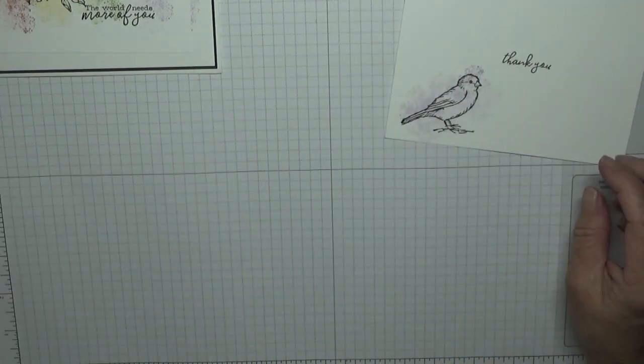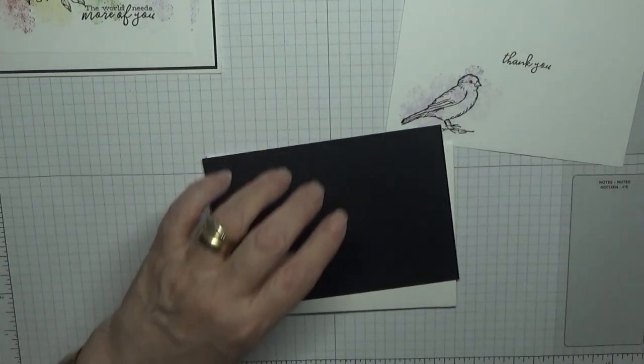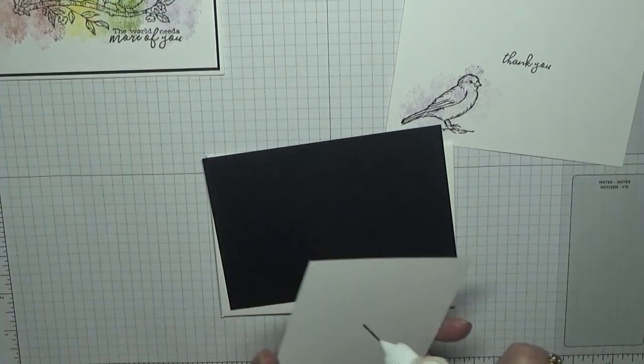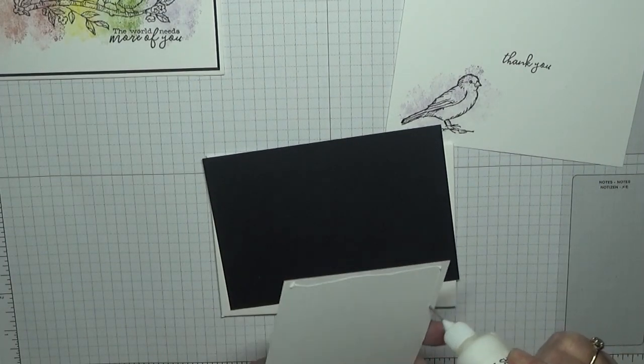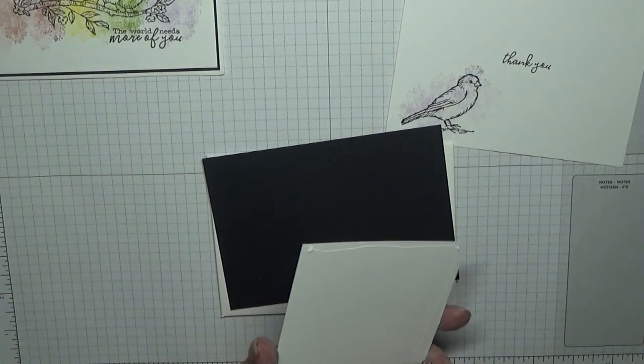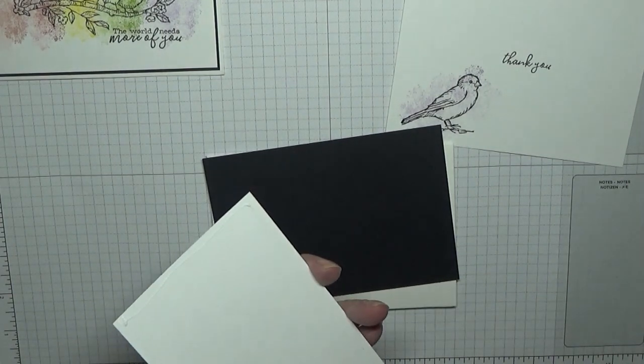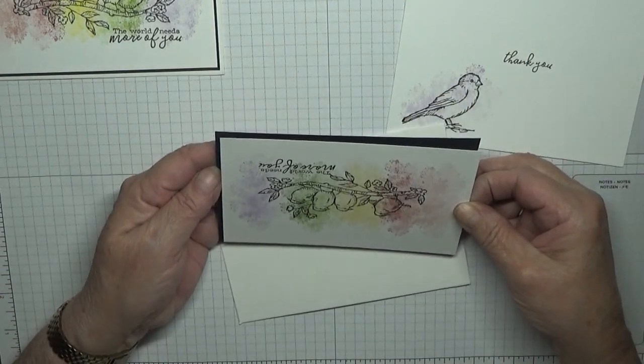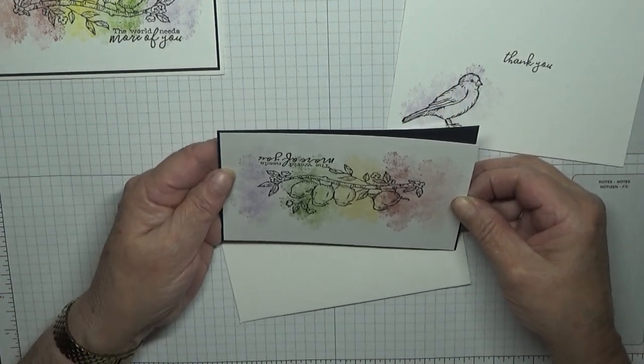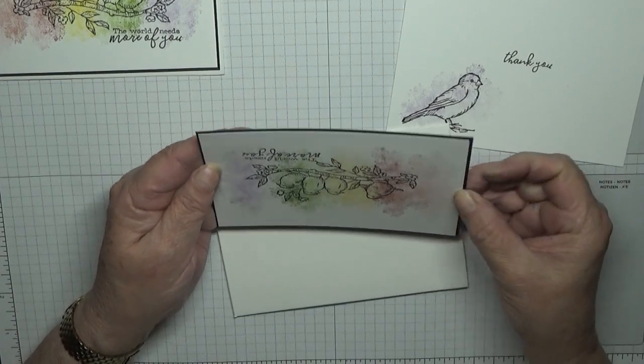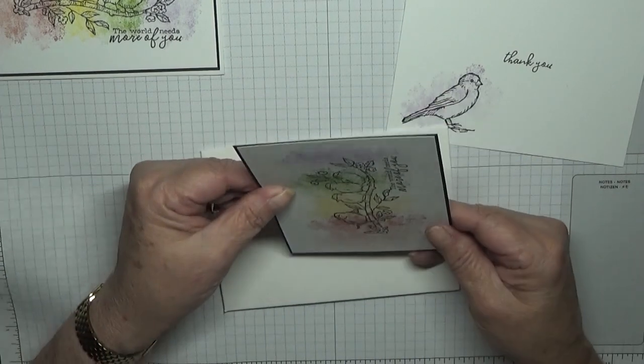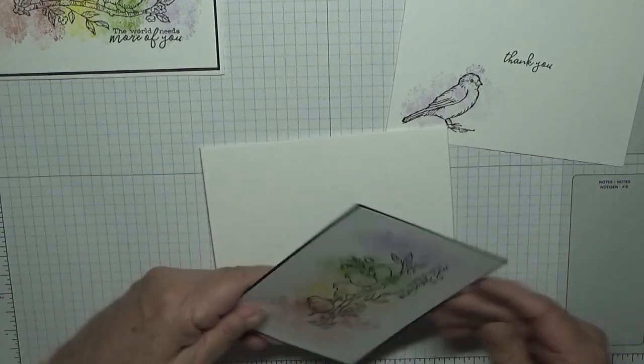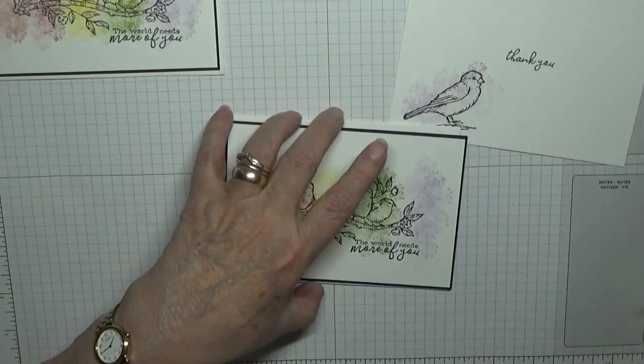So what we've got to do now is put the card together. So this I will glue on to the black, and then just glue that on to the card base.